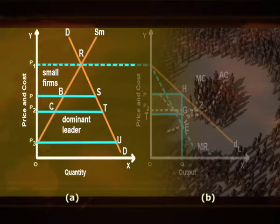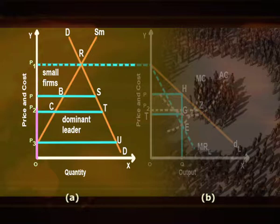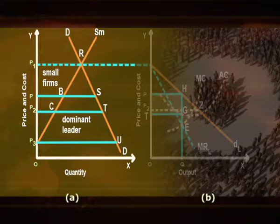At each price, the large firm can sell the quantity in the market which the small firms are unable to supply. In other words, the demand for the product of the dominant firm is the difference between total demand DD minus total supply SM by the small firms. For example, at price P1, the demand for the leader firm's product is zero because the entire quantity P1R is supplied by the small firms. As price falls below P1, the demand for the leader's product increases. At price P2, total demand is T and small firms supply P2C, while the leader firm supplies the remaining part CT. At price P3 and below, the entire quantity is supplied by the leader firm as small firm supply is zero. Thus, below price P3 the entire market demand coincides with the leader's demand curve.